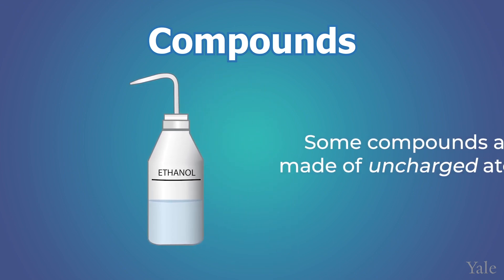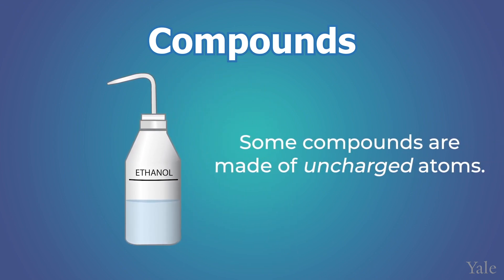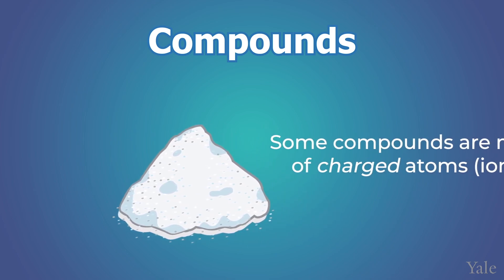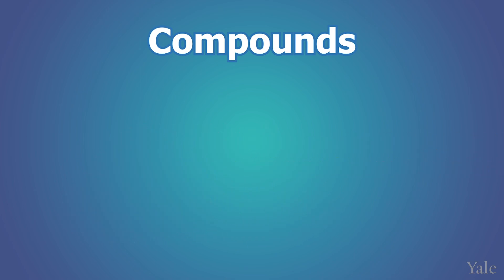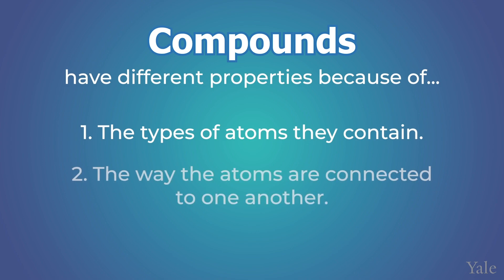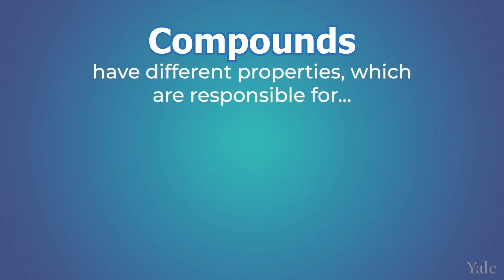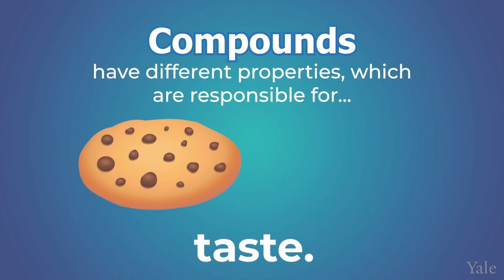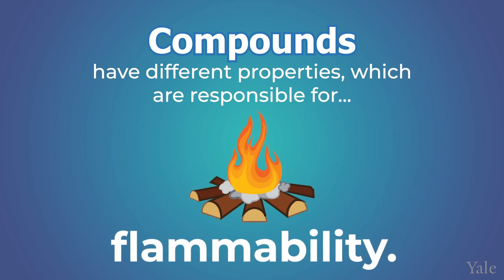So let's summarize. Compounds like ethanol are made up of uncharged atoms, while compounds like salt are made up of charged atoms called ions. Compounds have different properties because of the types of atoms they contain and the way the atoms are connected. This allows us to have different compounds that are responsible for sweet and sour tastes, making and putting out a fire, and a whole assortment of other fascinating properties. For many people, the properties of different molecules are what makes chemistry so exciting.